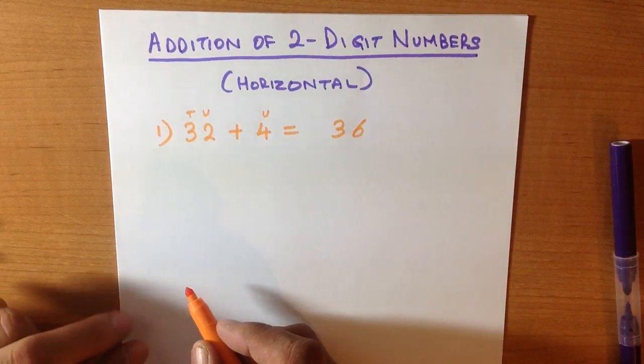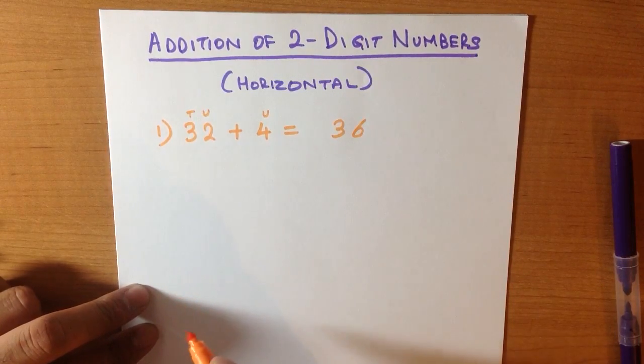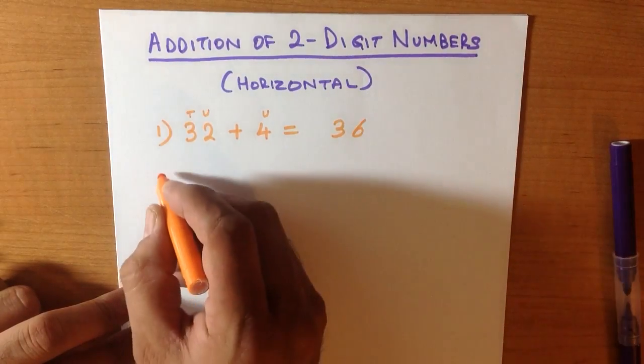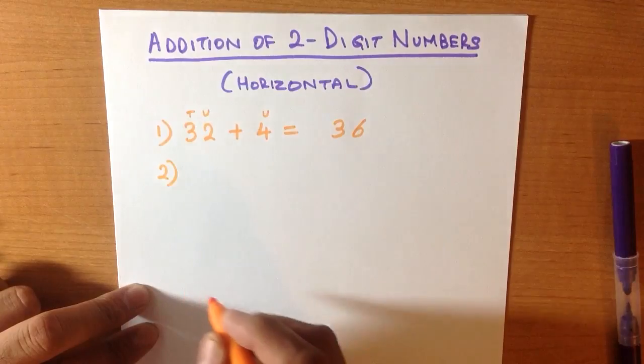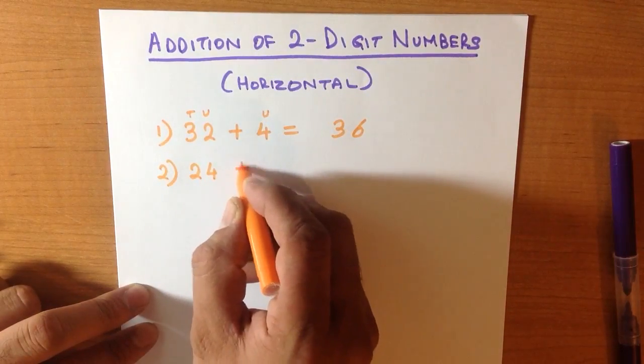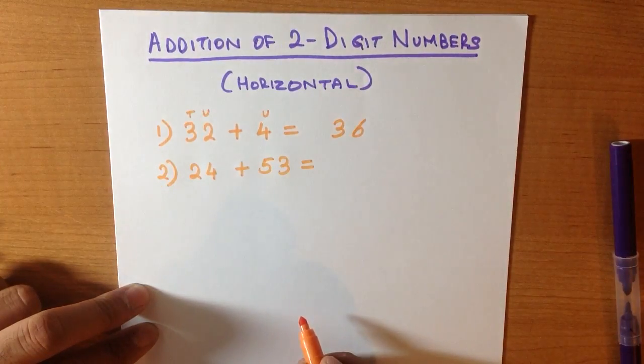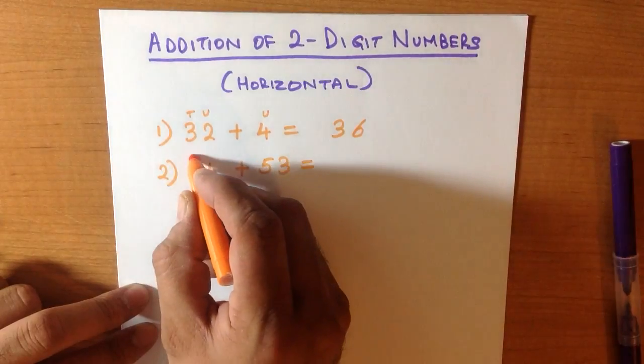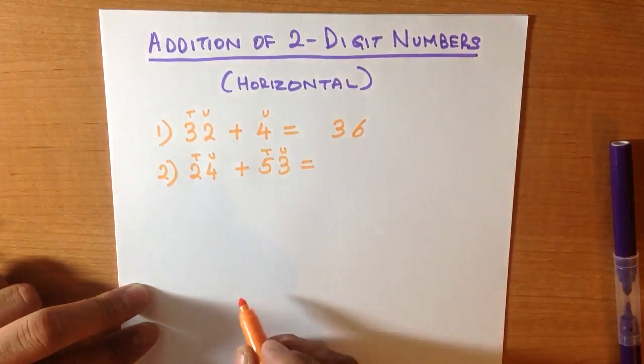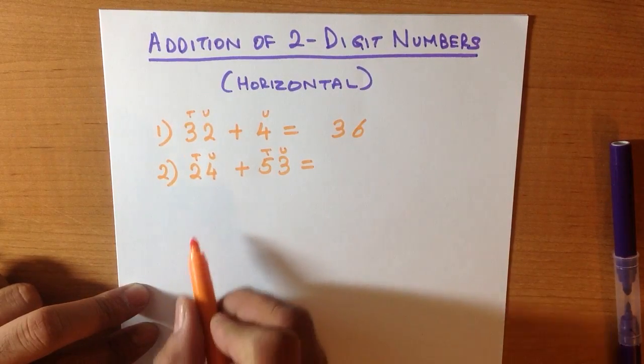Now let's work through an example where both the numbers are two-digit numbers but there is no carrying involved. What is 24 plus 53? Now we can label them again: tens, units, tens, units. And as in the first example, we add the units together.